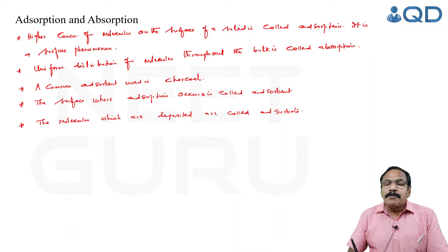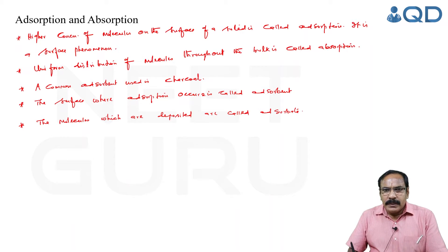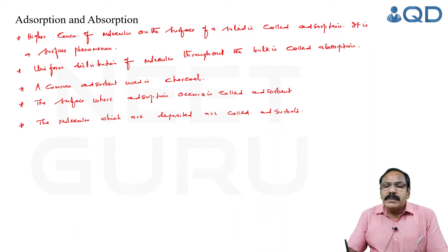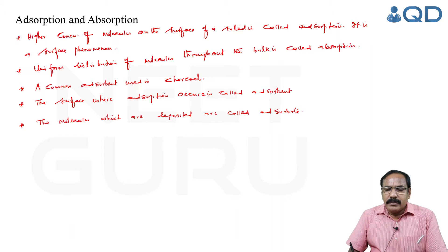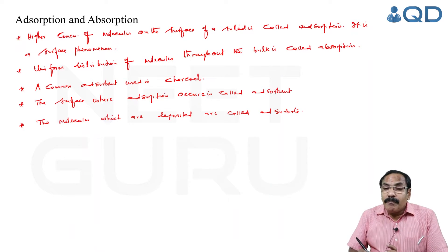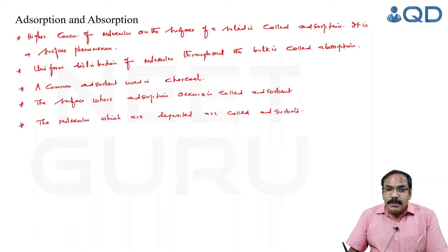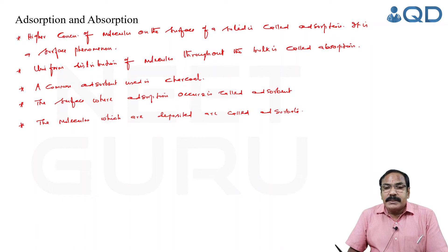For example, when charcoal is added to acetic acid, the acetic acid molecules are adsorbed on charcoal — so acetic acid is the adsorbate and charcoal is the adsorbent. Remember, there is a strong force of attraction between the adsorbent and adsorbate in some cases, and a weak force of attraction in others.